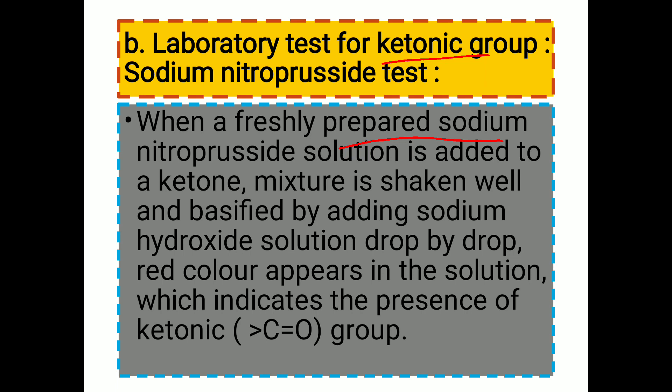For the laboratory test of the ketonic group, when a freshly prepared sodium nitroprusside solution is added to a ketone, the mixture is shaken well and then acidified by adding sodium hydroxide solution. A red color appears in the solution, which indicates the presence of the ketonic group.